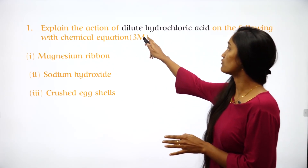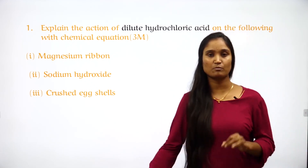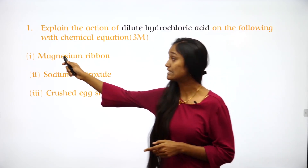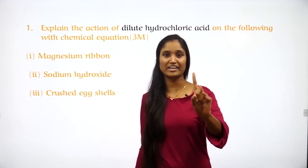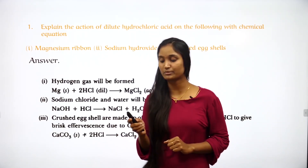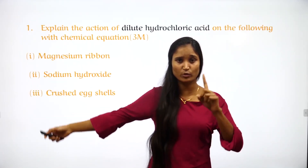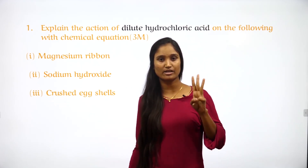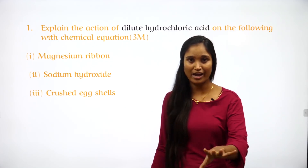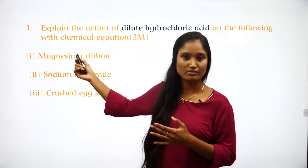Question number one: explain the action of dilute hydrochloric acid on the following, with the help of a chemical equation. This question came for three marks in the 2015 or 2016 paper, and it has three parts — each part carries one mark. When you are asked to write a chemical equation, you have to write the balanced equation and also include the physical states.